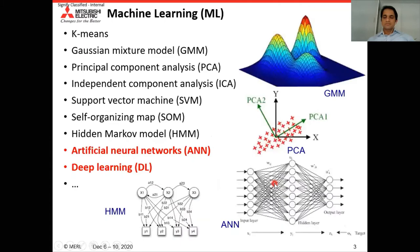Coming to machine learning, there have been a lot of machine learning methods such as K-means, Gaussian mixture models, principal component analysis, and deep learning. There has been a lot of attention from the research community in deep learning, and this could be attributed to the availability of large computing power and large datasets, which makes it feasible to apply these big deep learning models.